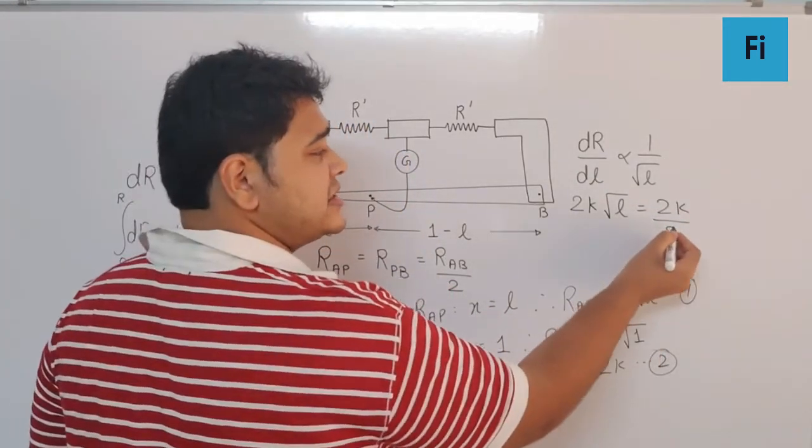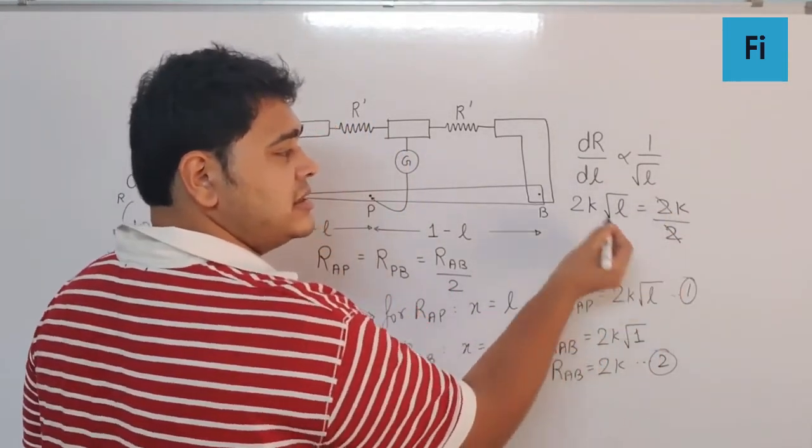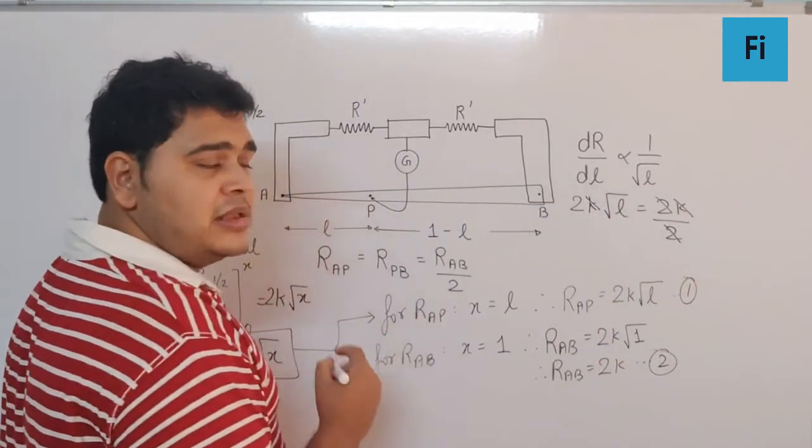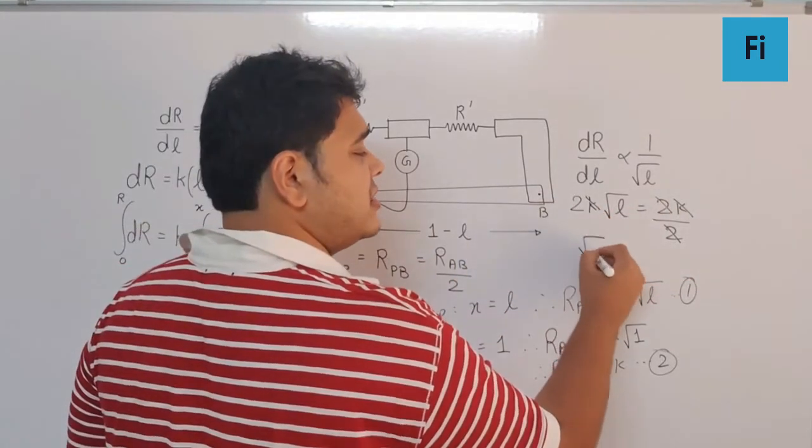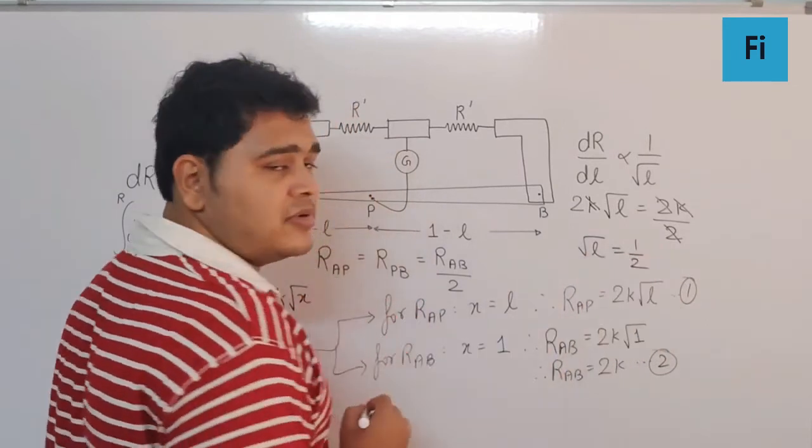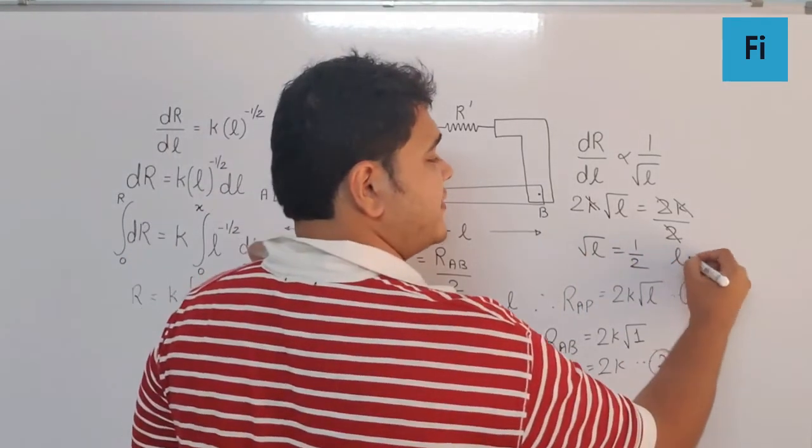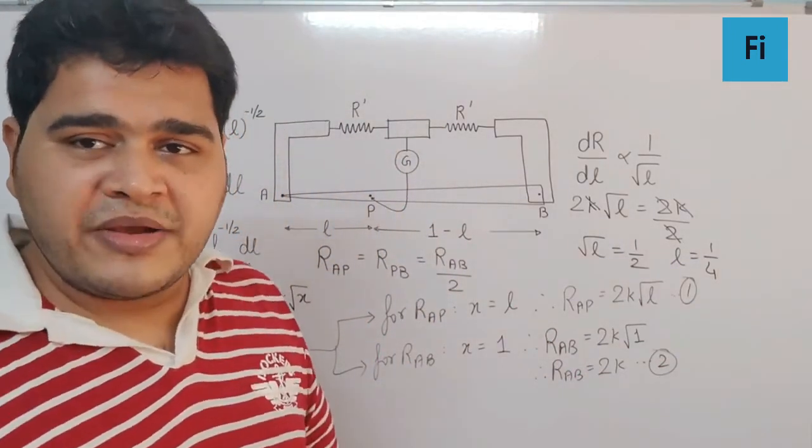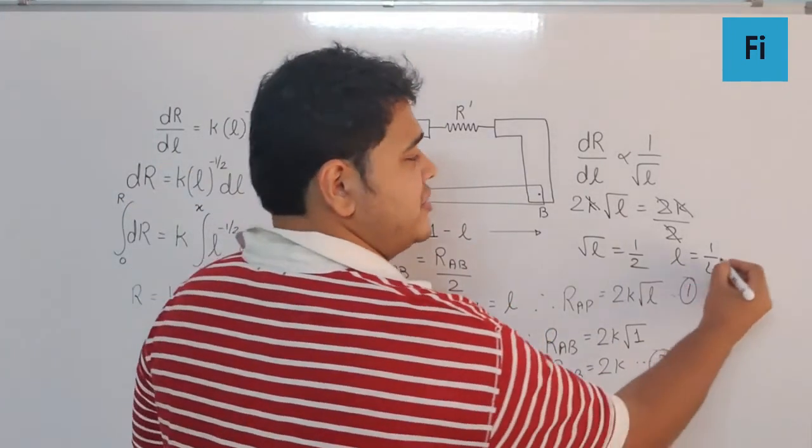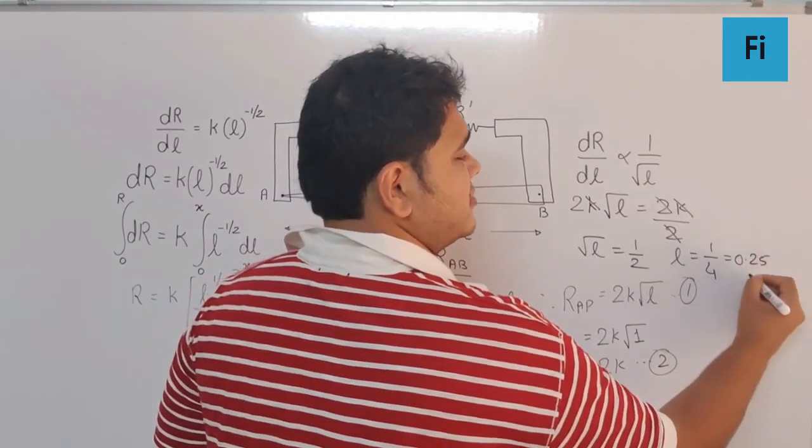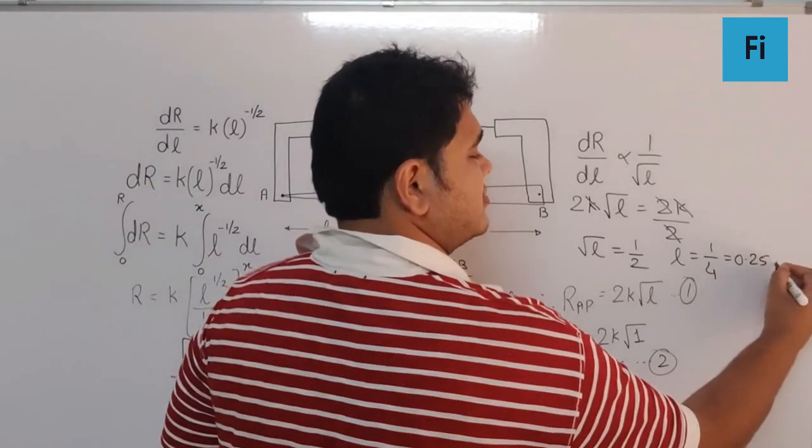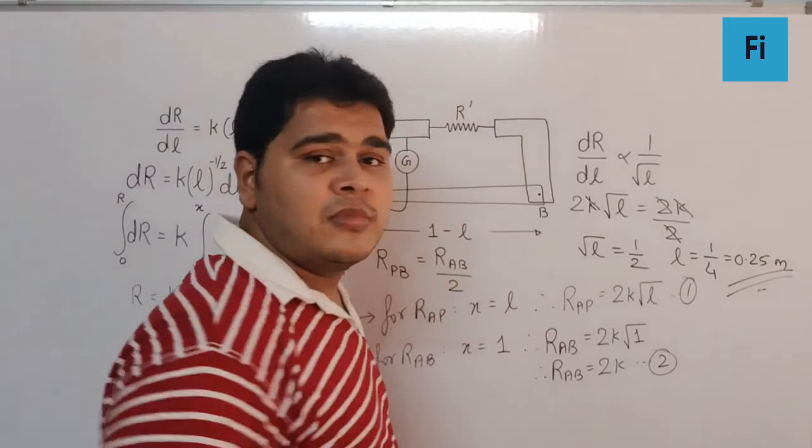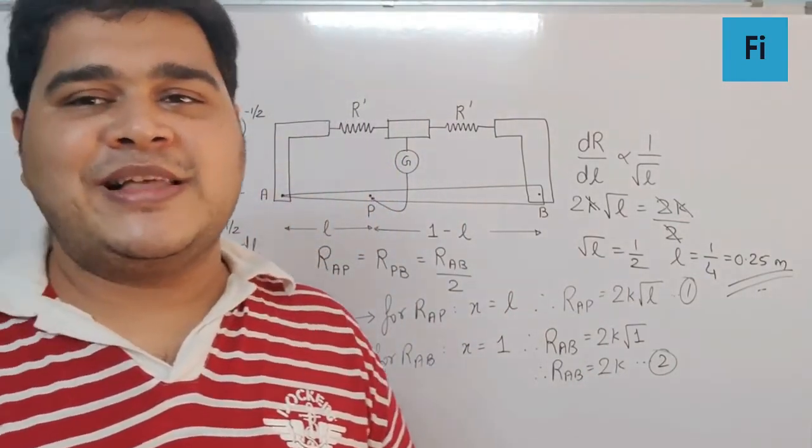Definitely this k gets cancelled, so we get √L = 1/2. Squaring on both sides, we get the value of L as 1/4. Now we know 1/4 is 0.25 meter, and that is your final length.